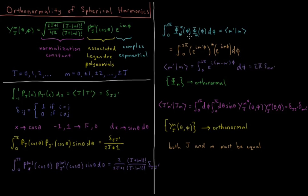If the values of m are different, the functions are orthogonal to one another. The 2pi factor, when m equals m prime, shows up in the normalization constant. The 2 from the associated Legendre polynomial normalization and the 2pi from the phi integral combine to give the square root of 4pi in the normalization constant. So the phi functions are orthonormal. When we have different values of j, orthogonality comes through the associated Legendre polynomials; when we have different values of m, orthogonality comes through the complex exponential.